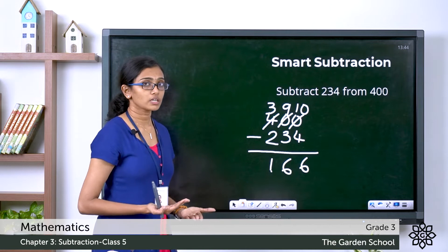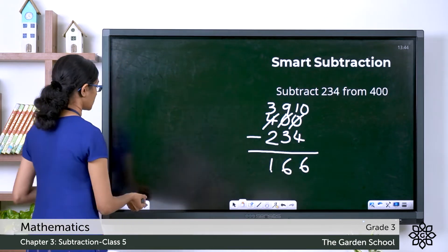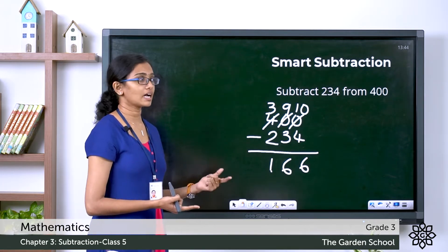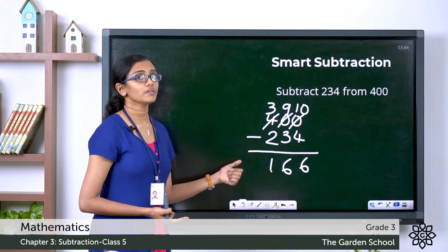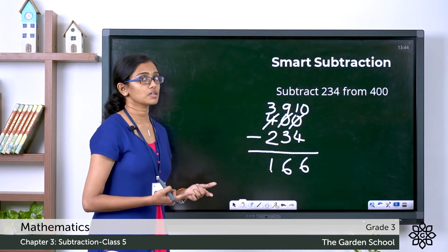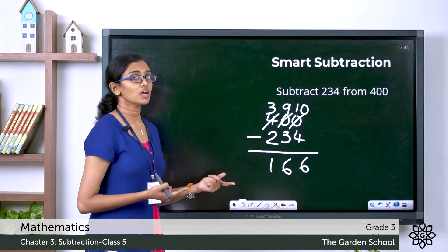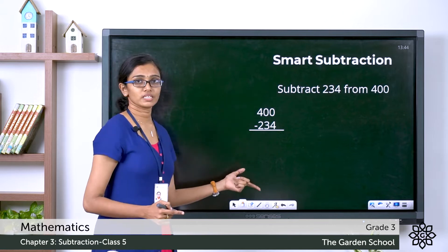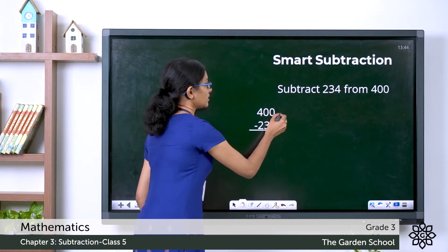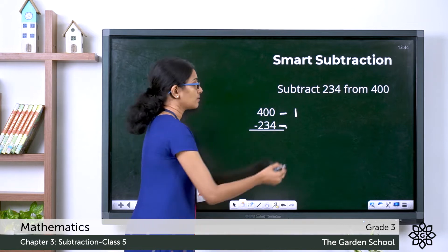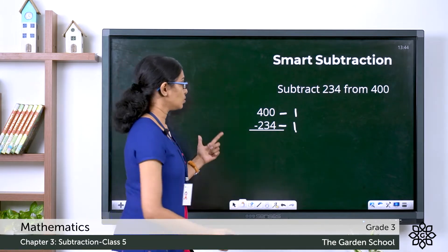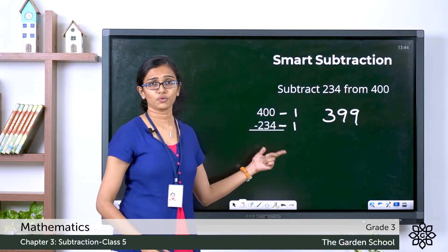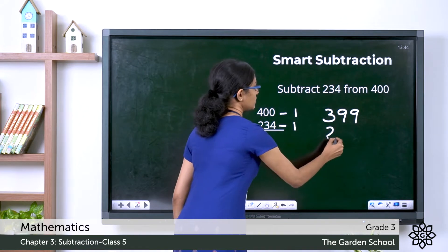What if we have a shortcut instead of this regrouping? Let's see that shortcut now. In the previous example of 10 minus 6, we discussed that subtracting the same number from both the minuend and the subtrahend will not change the actual difference. With that in mind, I am going to subtract 1 from both of these numbers: 400 minus 1 and 234 minus 1. So that changes these numbers to 399 and 233.